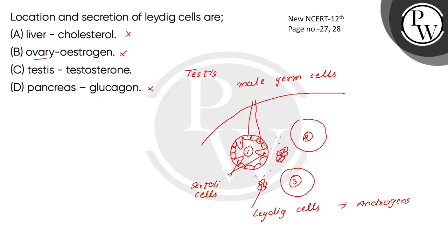So your correct option is: Testes — location, and testosterone — secretion. This information is from the new NCERT Class 10, pages 27 and 28. Thank you.